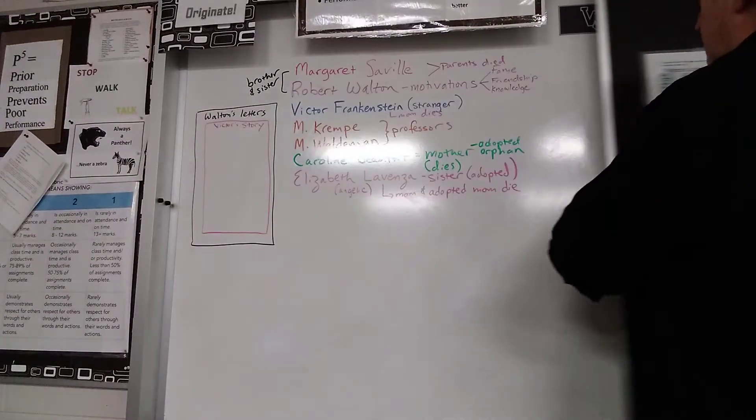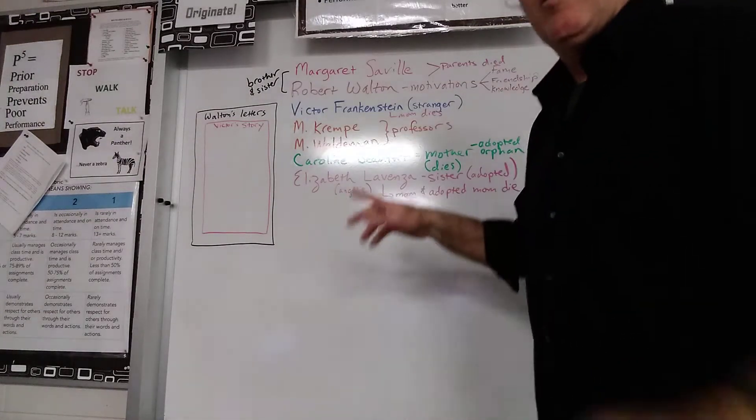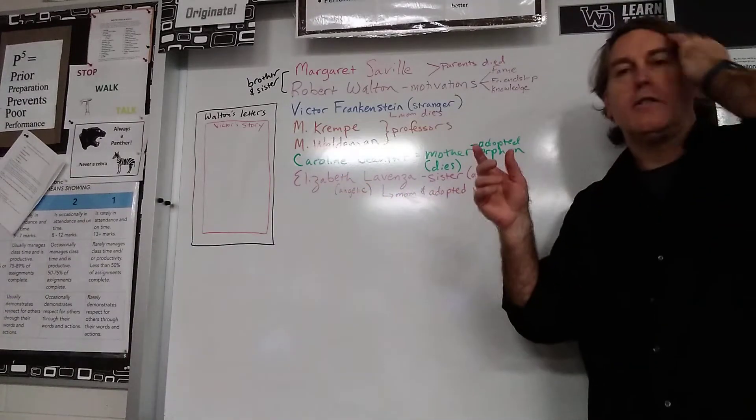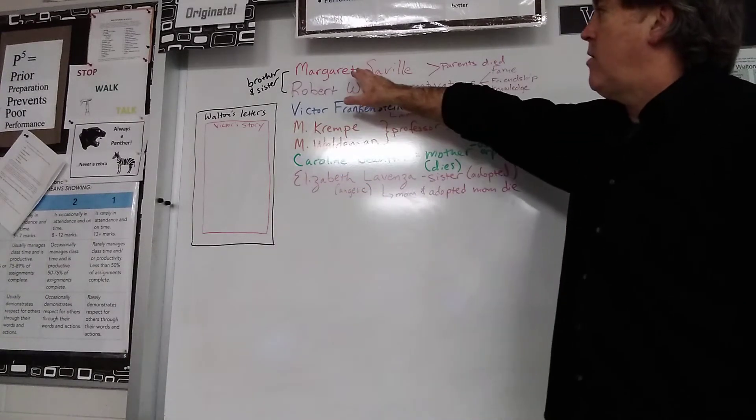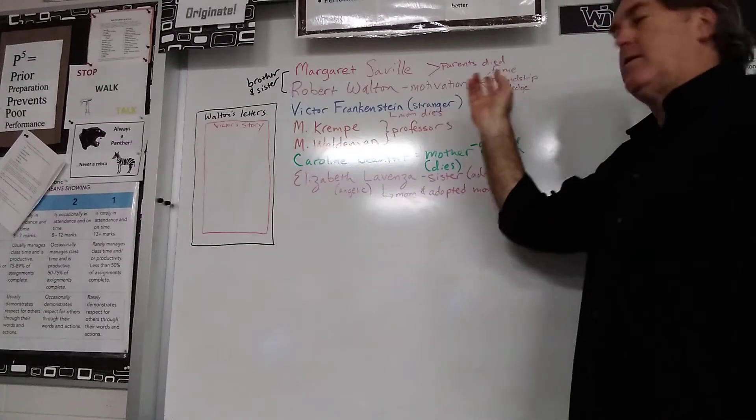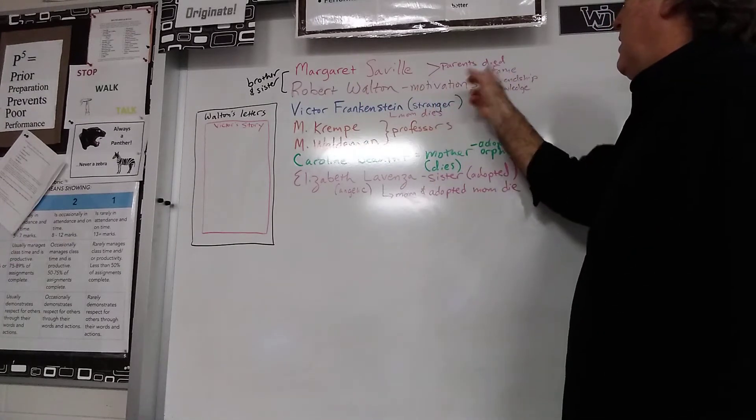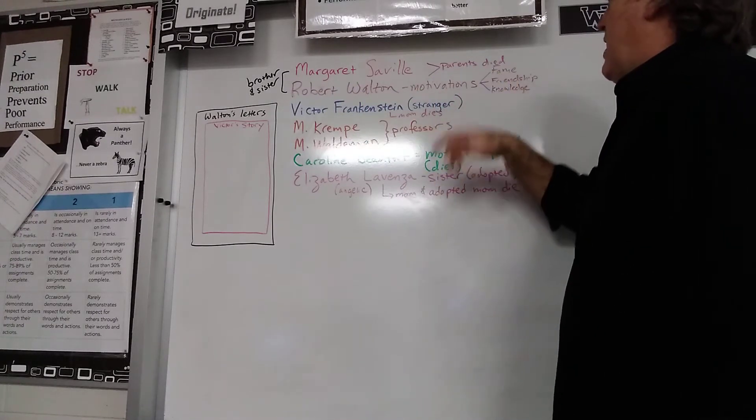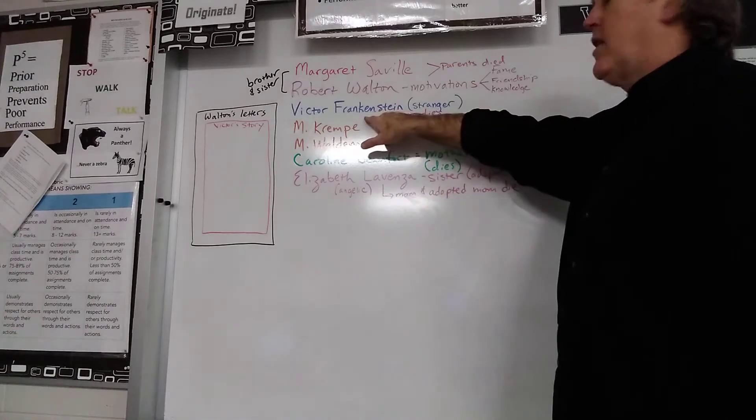A couple characters. You might not be able to see it very well. So anyway, we have Margaret and Robert, their brother and sister. Their parents died. Remember that. His motivation is fame, friendship and knowledge, and then you have Victor.